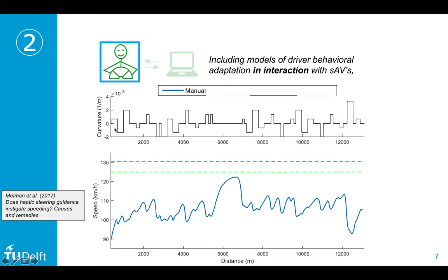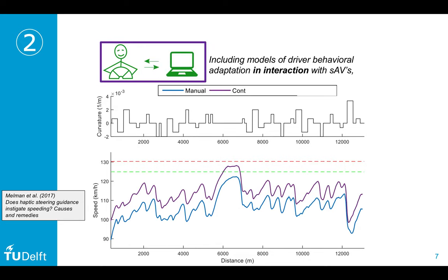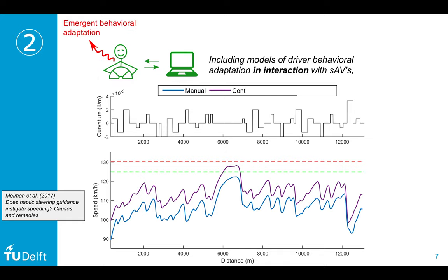Here you see a curvature profile of a road and how people drive in terms of speed — averaged across drivers tested in a simulator. On long straight sections, people speed up, then slow down around curves. This is the unsupported baseline. When we gave haptic lane-keeping assistance to drivers without further instruction, they sped up — potentially dangerously in some areas. We call this emergent behavioral adaptation arising from the interaction design.